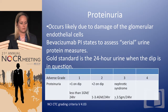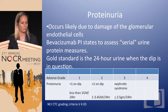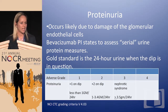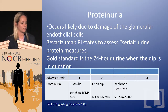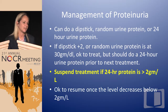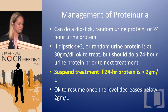For proteinuria, the gold standard is a 24-hour urine if the dipstick is in question. The package insert says serial urine tests, which can mean every visit or every fifth visit. You want to suspend treatment if the 24-hour urine protein is greater than 2 grams, which is actually very rare. It seemed to happen more in clinical trials than in current practice.